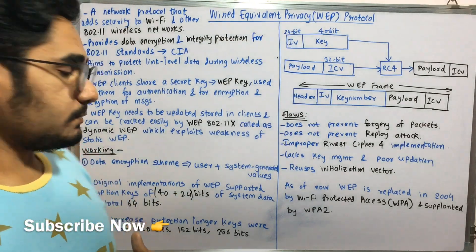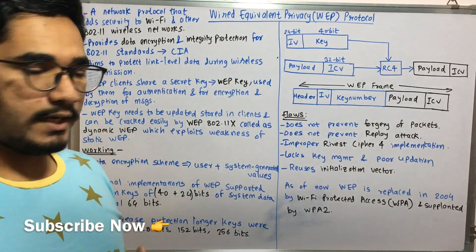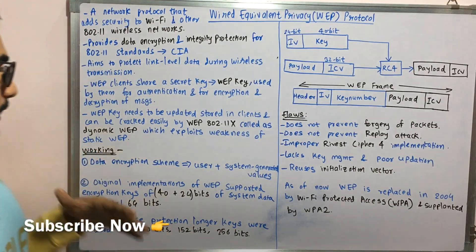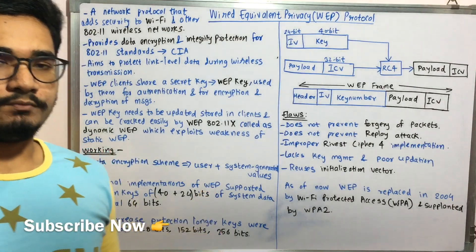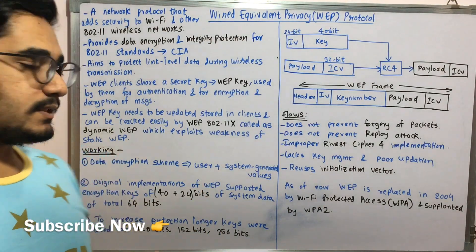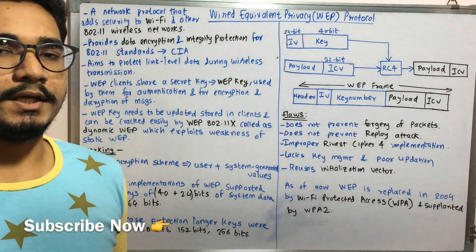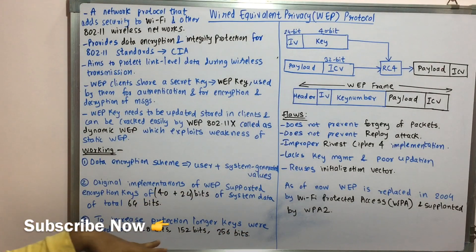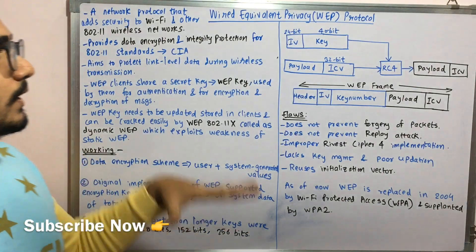Originally, 64 bits was the data key standard used. But anticipating future challenges, longer keys were introduced: 128 bits, 152 bits, and 256 bits, in order to increase the protection level.